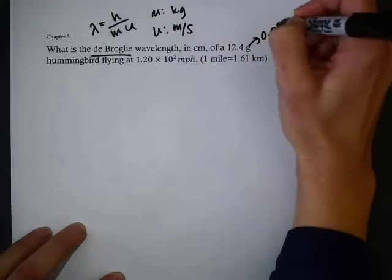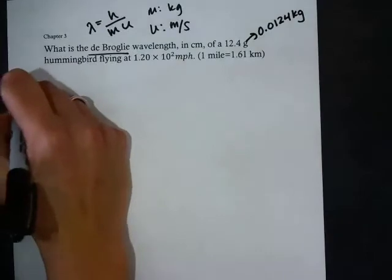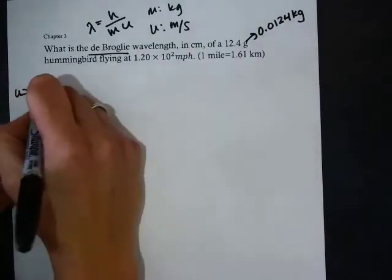The wavelength equals h over m times u, where m is the mass in kilograms and u is the speed in meters per second.